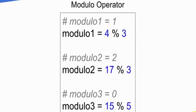Next is the modulo operator. If we have a modulo operator and we have a remainder value, it is the modulo operator. If we have a quotient value, we will get the quotient value. Now, 4 divided by 3 gives the remainder 1. That is, 4 divided by 3: if we divide 3 by 3, it is 1. That is the value of 4 modulo 3.